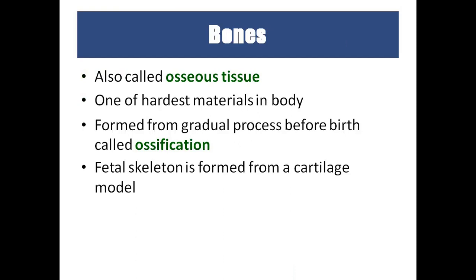Bones are osseous tissue — one of the hardest materials in the body. They form through a gradual process. At birth, we have around 300 bones. As the baby grows, bones decrease in number — from 300 to 206 — because fusion of bones takes place. The conversion of cartilage into bone is called ossification.